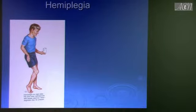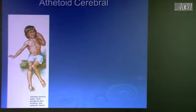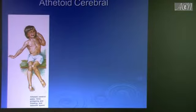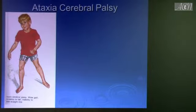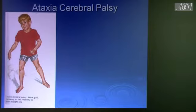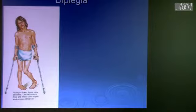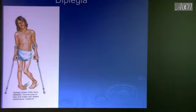Athetoid cerebral palsy — slow writhing movements. Ataxic cerebral palsy — defined by wide-based gait, regardless of the cause. Diplegia — lower extremities involved. In quadriplegia you have scissoring because the adductors are very severely affected, but in diplegia, even though lower extremities are involved, there is not as much adductor spasm.